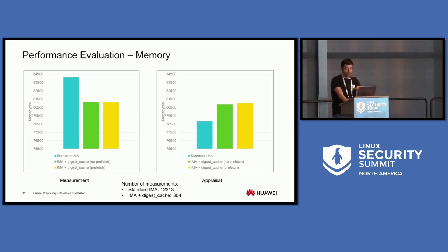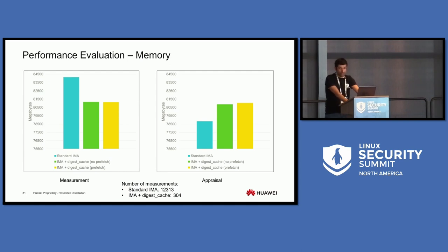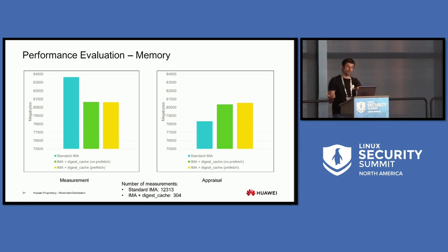For memory occupation, standard IMA with 12,313 measurements occupies more memory, and the Digest Cache LSM less. However, for appraisal, standard IMA keeps nothing in memory, so it uses less memory than the Digest Cache LSM, which keeps the package digests in memory.